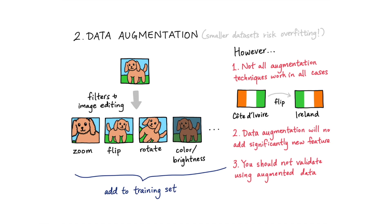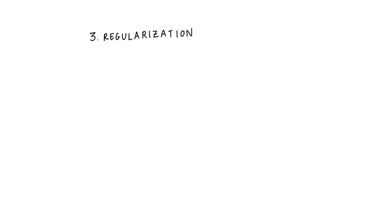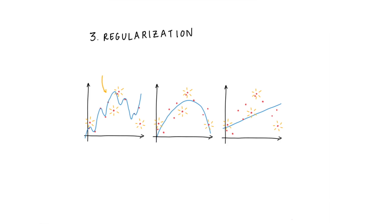And then there's regularization. Regularization is a method applied during the training process to combat overfitting. It basically involves adding a penalty for more complex functions. When you optimize a function with regularization, you're balancing between accuracy and simplicity. You can weigh both of these differently to try and find the best balance between them. In a later video, we'll talk more about the technical details behind regularization.